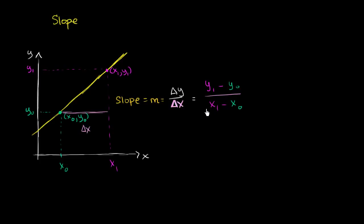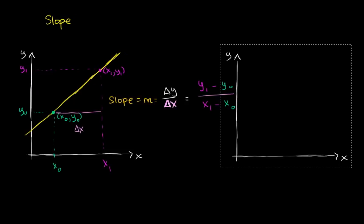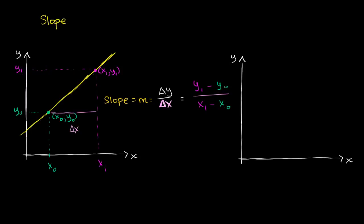So this is what you probably remember from algebra class — the definition of slope. It's the rate of change of y with respect to x, or the rate of change of our vertical axis with respect to our horizontal axis. Now I'm going to introduce a little bit of a conundrum. That was for a line, and a line by definition has a constant slope. If you calculate this between any two points on the line, it's going to be constant. But what happens when we start dealing with curves — non-linear curves?